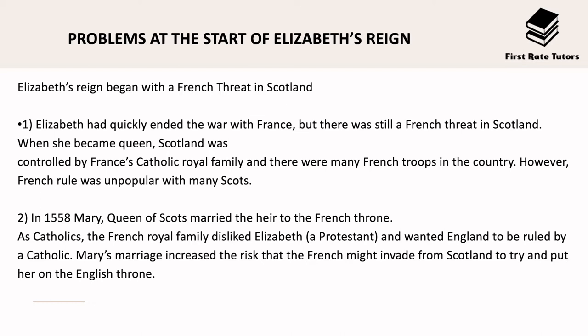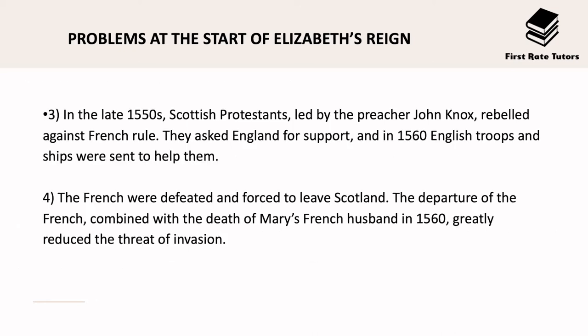Her reign also began with a French threat in Scotland. When she became Queen, Scotland was controlled by France's Catholic royal family and there were many French troops in the country, though French rule was really unpopular with the Scots. In 1558 Mary Queen of Scots married the heir to the French throne, and as Catholics the French royal family disliked Elizabeth and wanted England to be ruled by a Catholic. In the late 1550s Scottish Protestants led by the preacher John Knox rebelled against French rule and asked England for support. In 1560 English troops and ships were sent to help them. The French were defeated and forced to leave Scotland, and the death of Mary's French husband in 1560 greatly reduced the French threat of invasion.